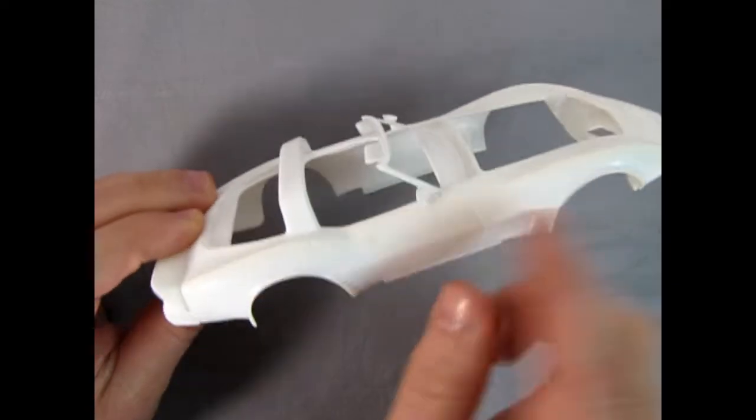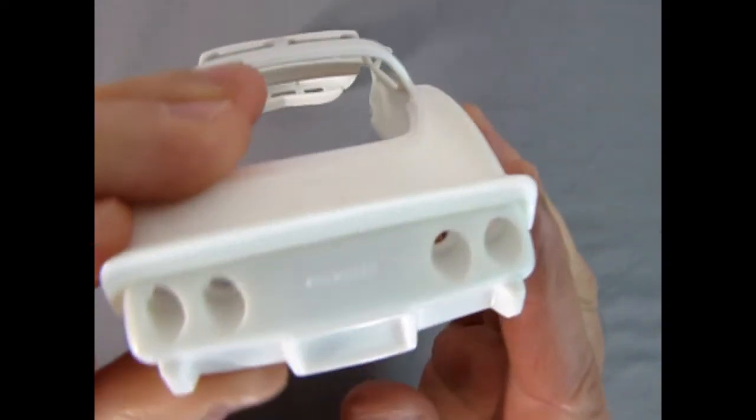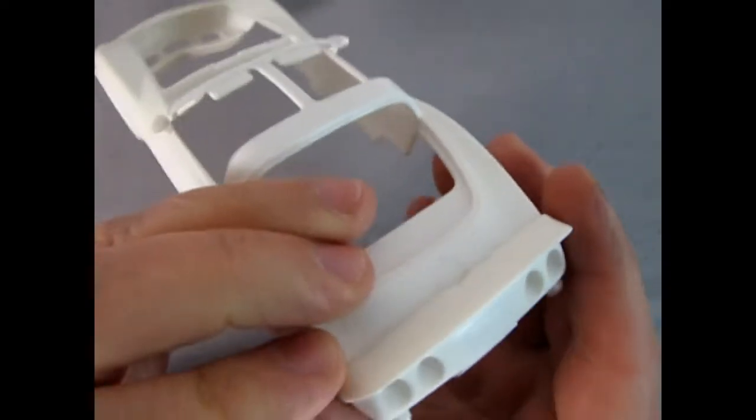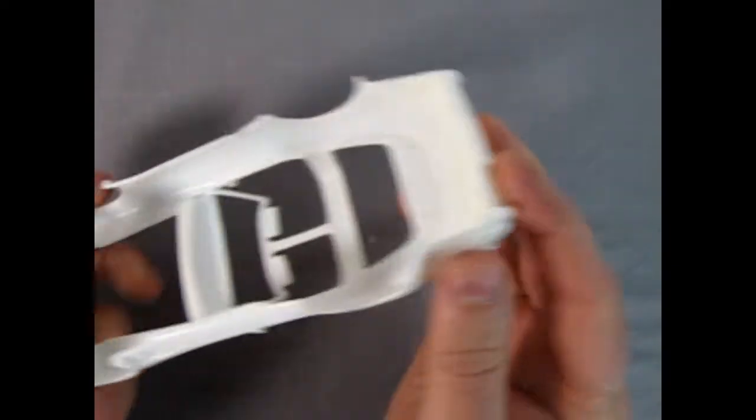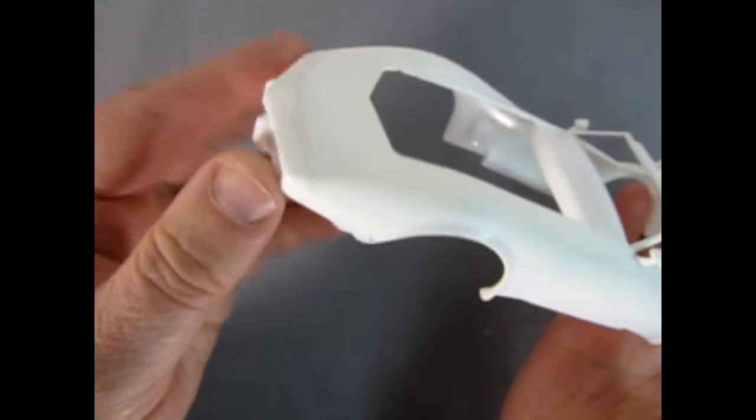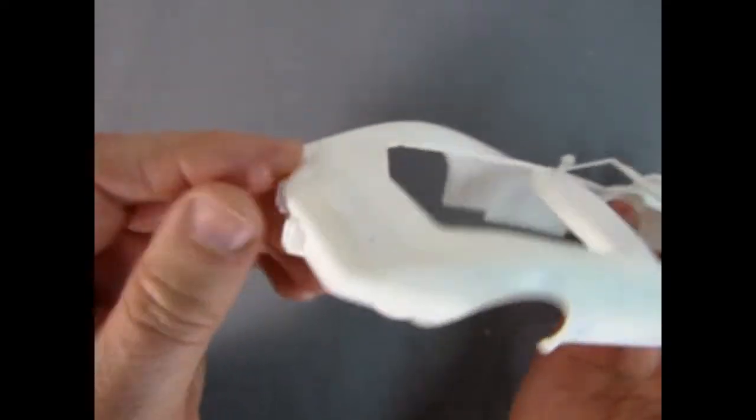There's the sugar scoop up the side and then we've got our back end with the Corvette emblem across there. You can see the fit and finish is quite nice on here once you get the parts glued on, and then there's our front nose as well.